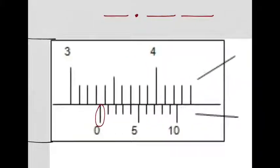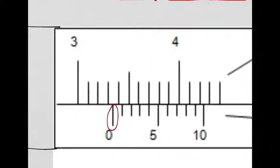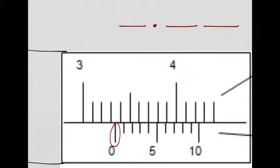So how many whole centimeters is the object that's being measured? Well, you can see that this line falls after the third centimeter. So I have three whole centimeters in my measurement so far.